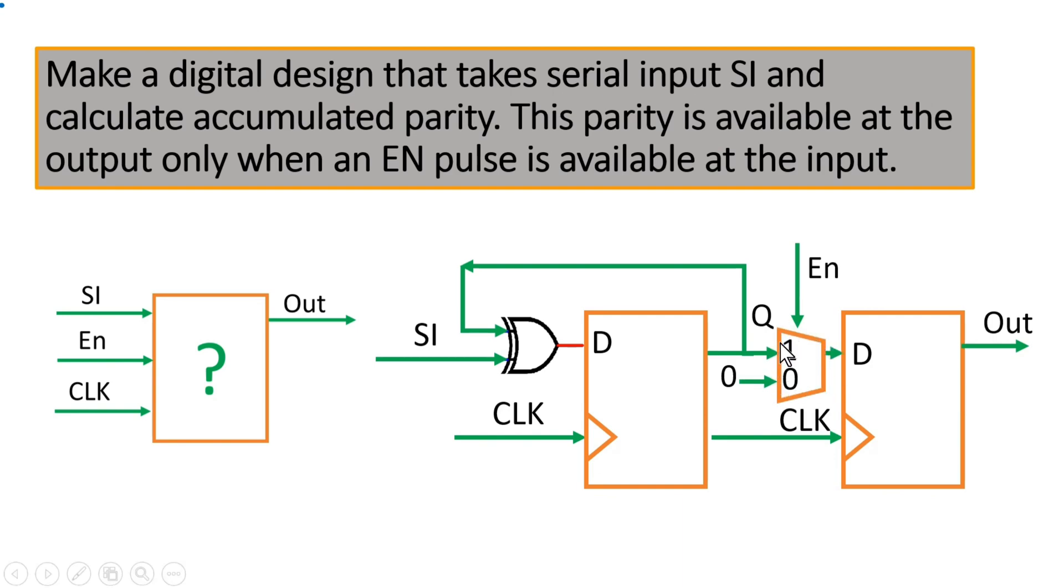Now see if it is meeting our desired functionality. When enable is high, Q will be passed to D. That is fine. When enable is 0, I am passing 0 in this case, but you can put out here also, not an issue. So when enable is 0, the D will remain 0, out signal will also remain 0. So this will be our final desired circuitry.